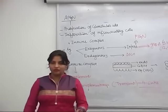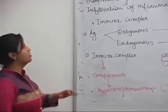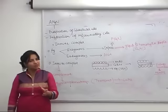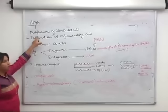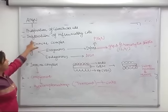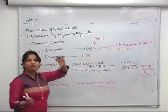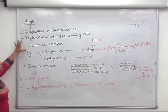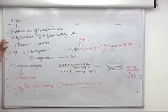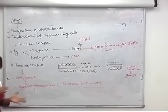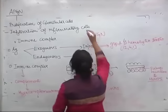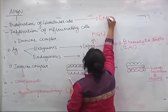The first disease we study is acute proliferative glomerulonephritis (APGN). It means there is proliferation of glomerular cells and infiltration of inflammatory cells. The glomerular cells known to proliferate in APGN are endothelial cells and mesangial cells. There is also infiltration of a lot of inflammatory cells.